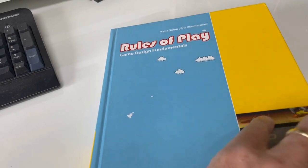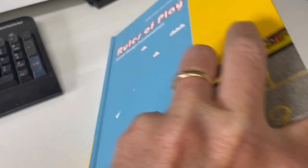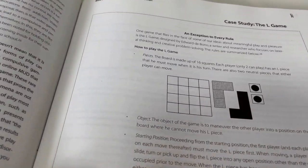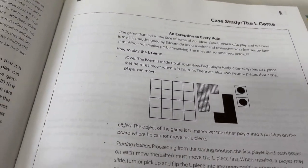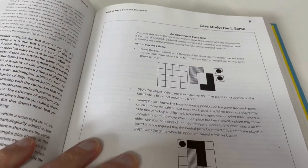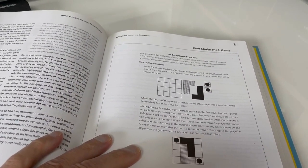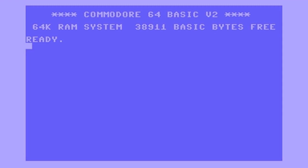Some time ago I picked up a book from my bookshelf that I had not opened for some time. It's about game design fundamentals, titled Rules of Play by Katie Salen and Eric Zimmerman. I bought this book when I was following a game design course. While browsing through the pages, I came across a short note about a game which was named the L-Game.